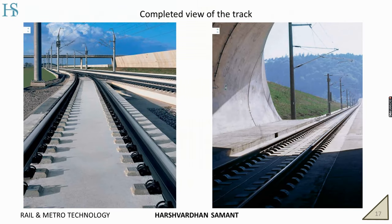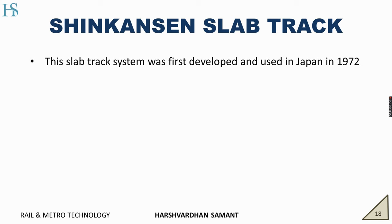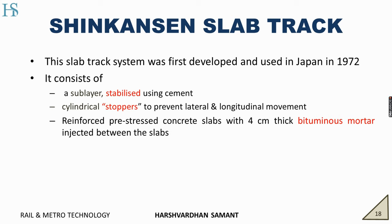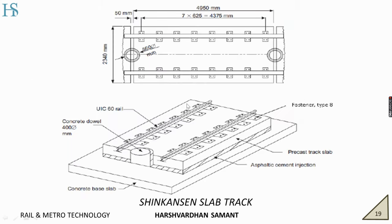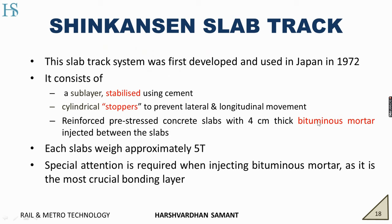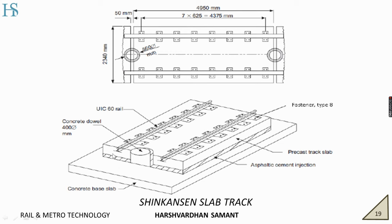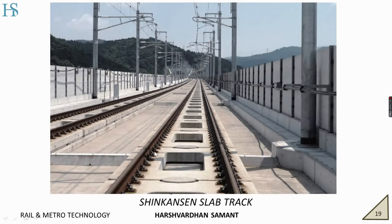This is how the complete view of the track will look. Moving on with our next system, the Shinkansen slab track. This was also developed in 1972 in Japan. The overall procedure remains the same, but there are three noticeable differences. Cement is used for stabilizing the sublayer. Then we have cylindrical stoppers to prevent lateral and longitudinal movement of the slab. This reinforced pre-stressed slab has 4 cm thickness of bituminous mortar injected between the slab. Each slab weighs around 5 tons. Special attention is required while injecting bituminous mortar, as it is the most crucial bonding layer — if something goes wrong infilling this gap, the entire system is a failure.